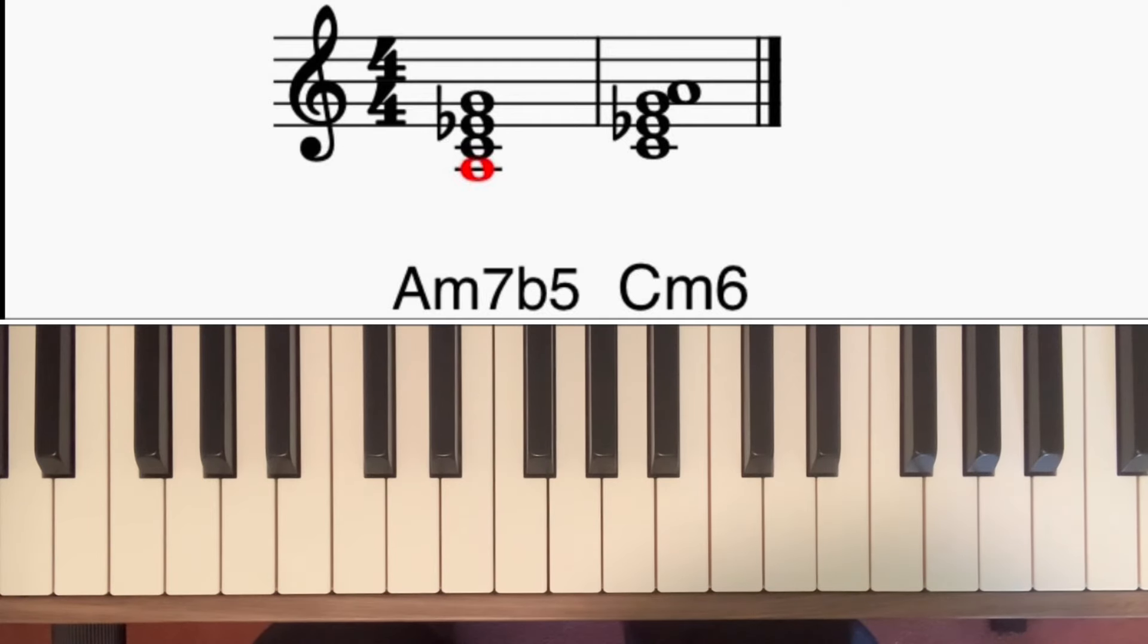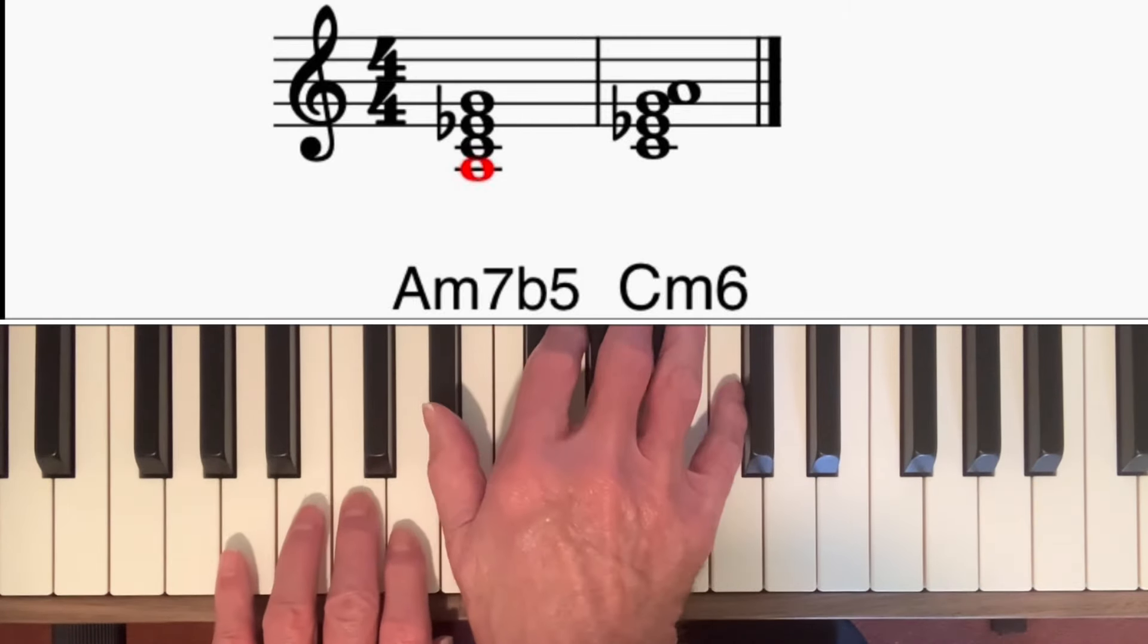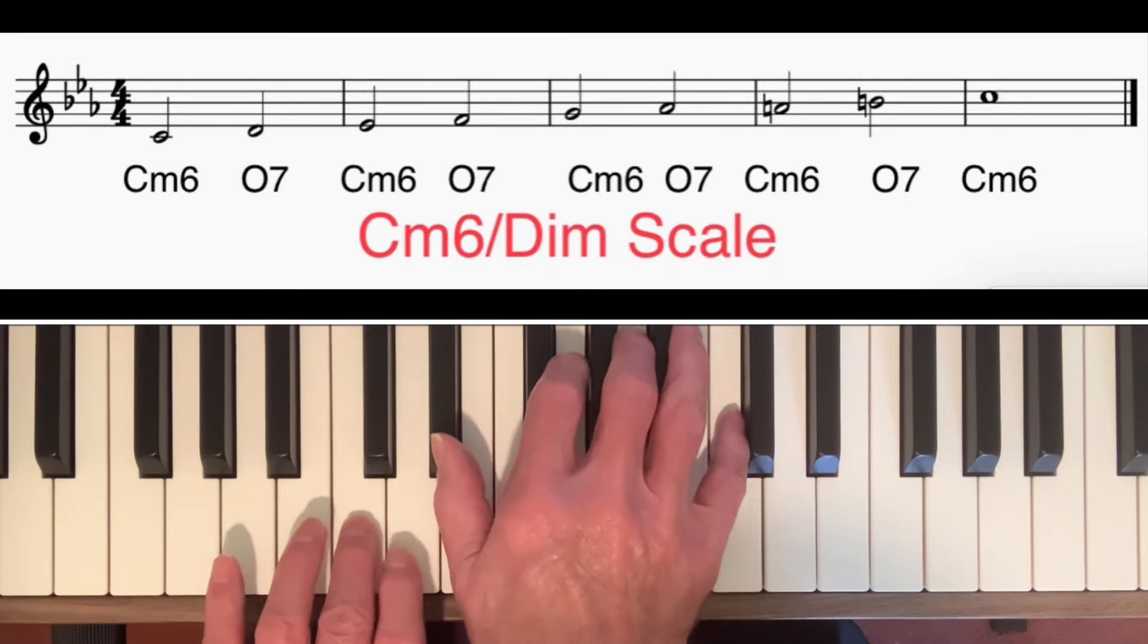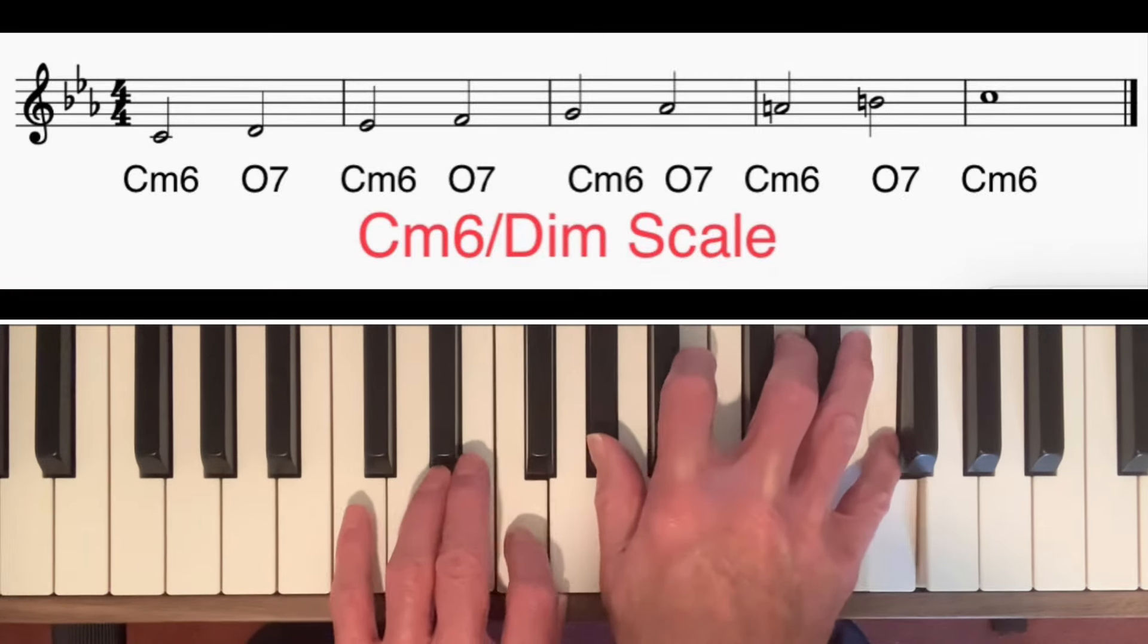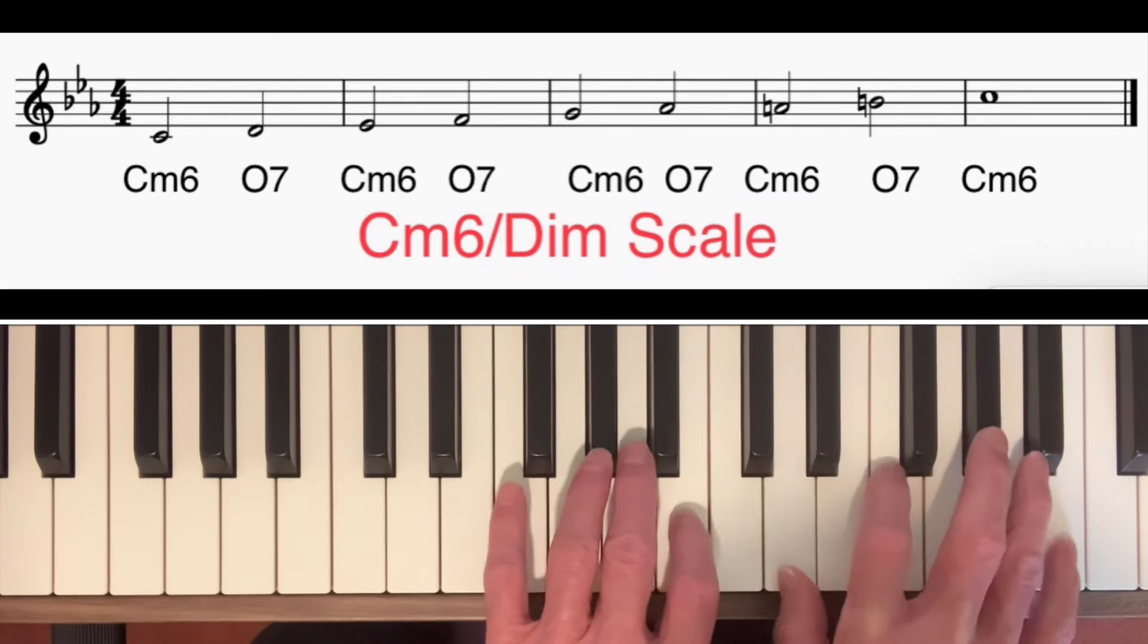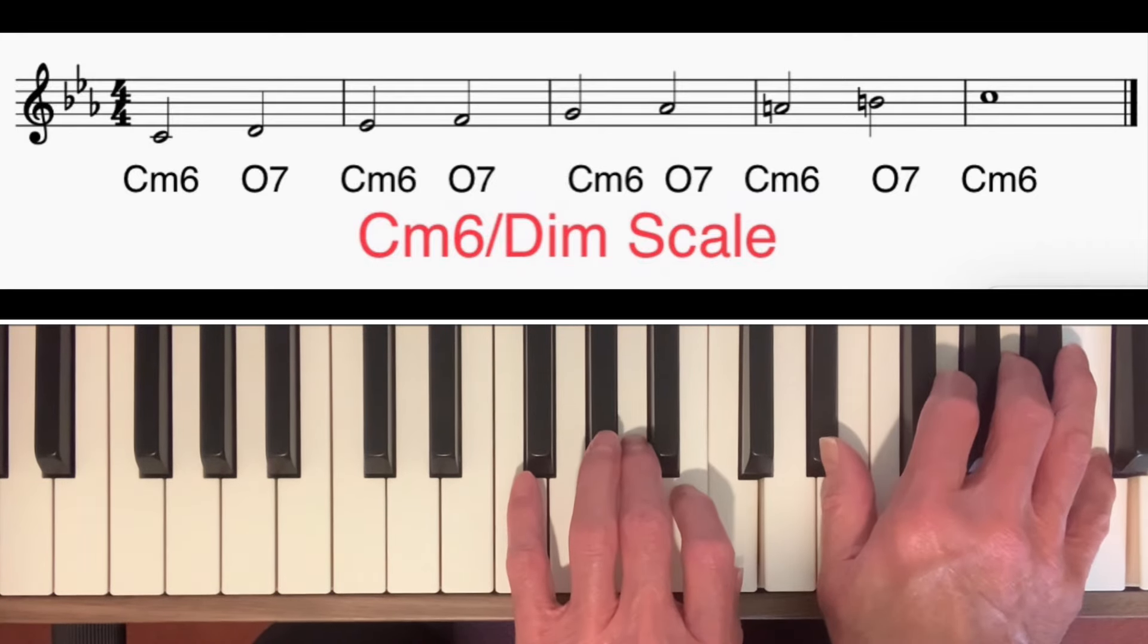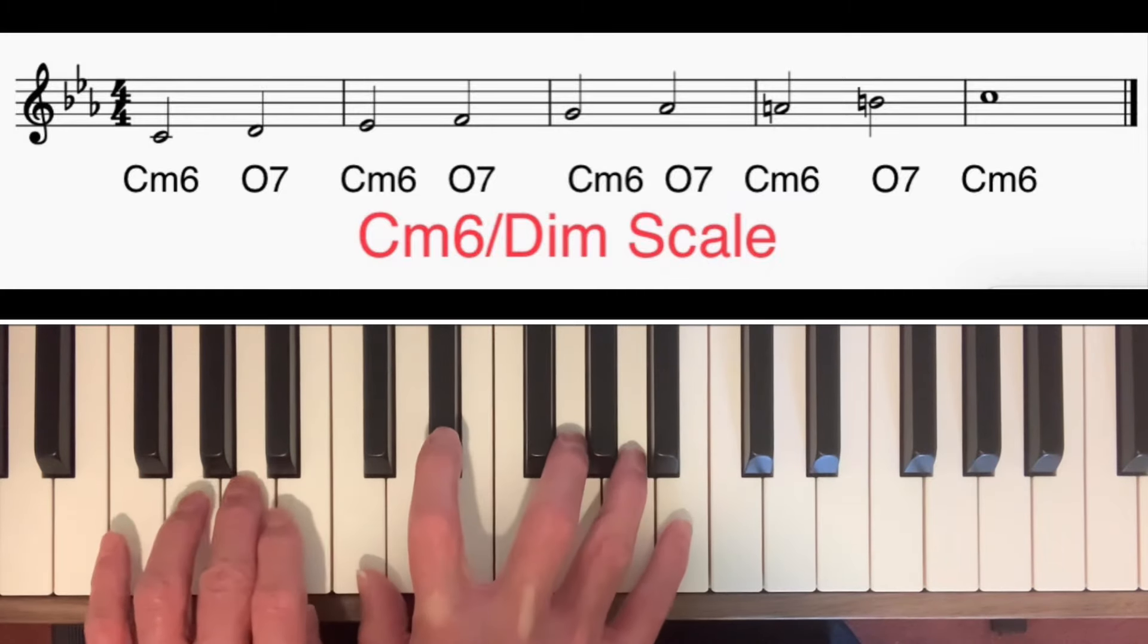And he therefore said that when you're playing on an A minor 7 flat 5 chord you can create movement using the C minor 6 diminished scale. In other words, alternating C minor 6 chords with diminished 7th chords. So he said you could play those same chords but start them on the A.